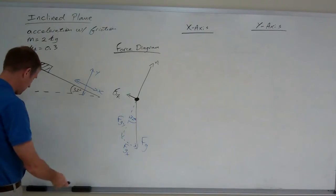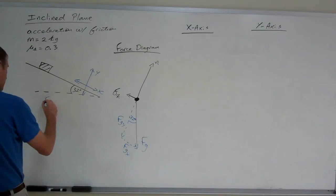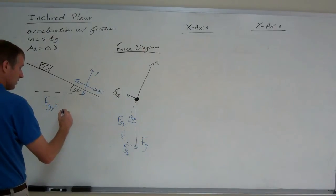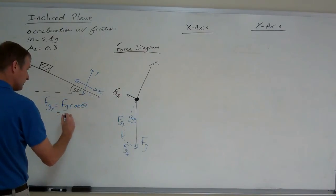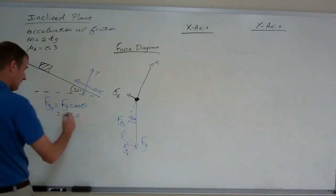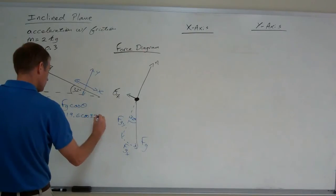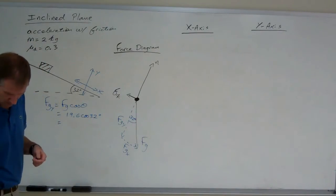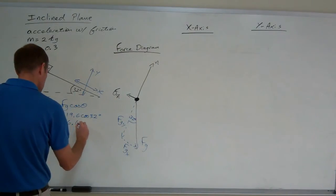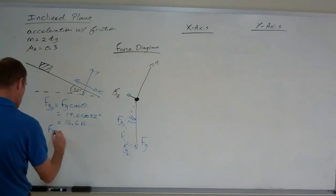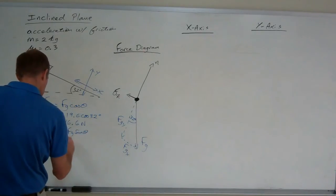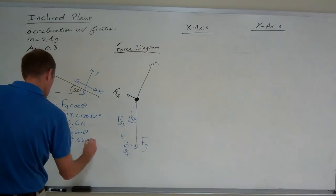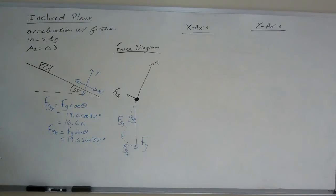Now, we need to calculate Fgy and Fgx. Fgy equals Fg times the cosine of the angle, which is 19.6 because it's 2 times 9.8. 19.6 times the cosine of 32 degrees, which comes out to be 16.6 newtons. Fgx will be Fg sin theta, which is 19.6 sine of 32 degrees, which equals 10.4 newtons.